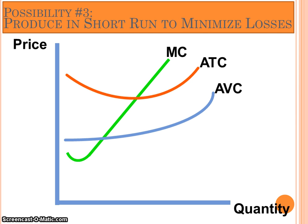Possibility number three, or condition number three, is to produce in the short run in order to minimize losses. In this situation, the producer is losing money. But if they went out of business immediately and decided to cease production and close their doors right now, they would actually lose more money than if they continued to produce in the short run to try to chip away at some of their fixed costs until they can get out of their fixed cost commitments.